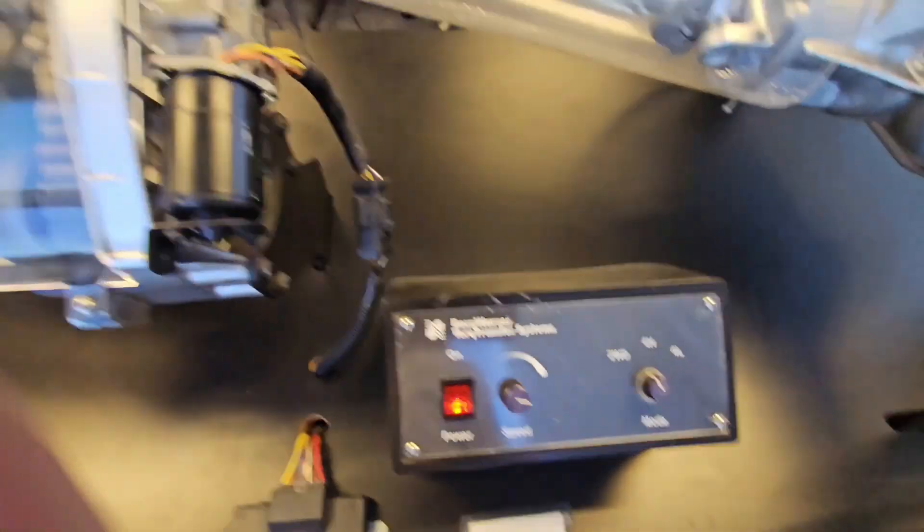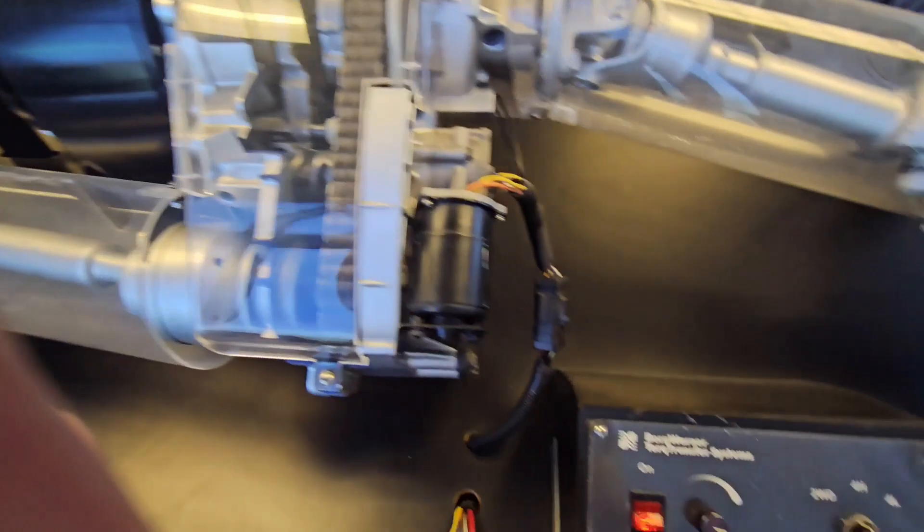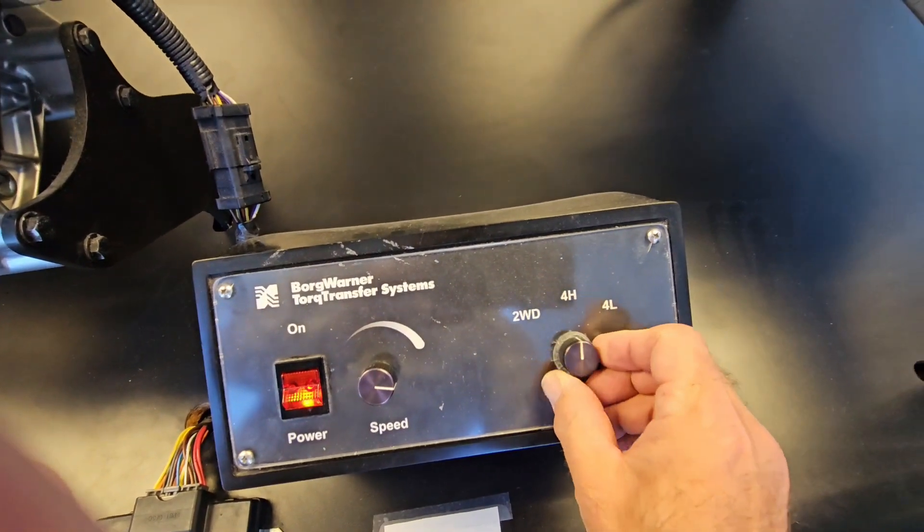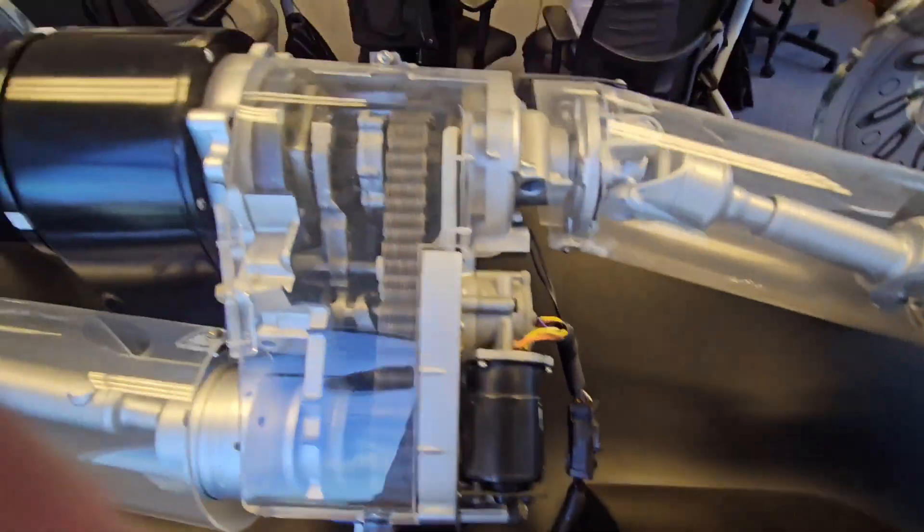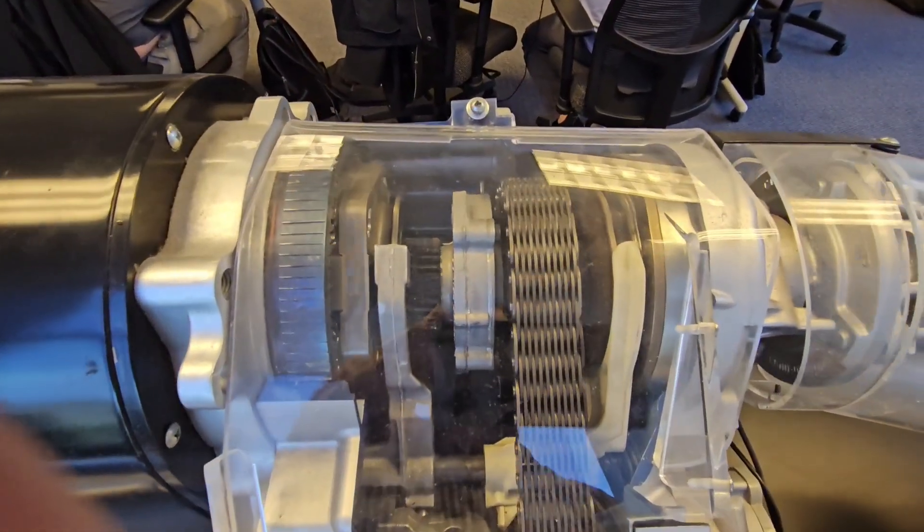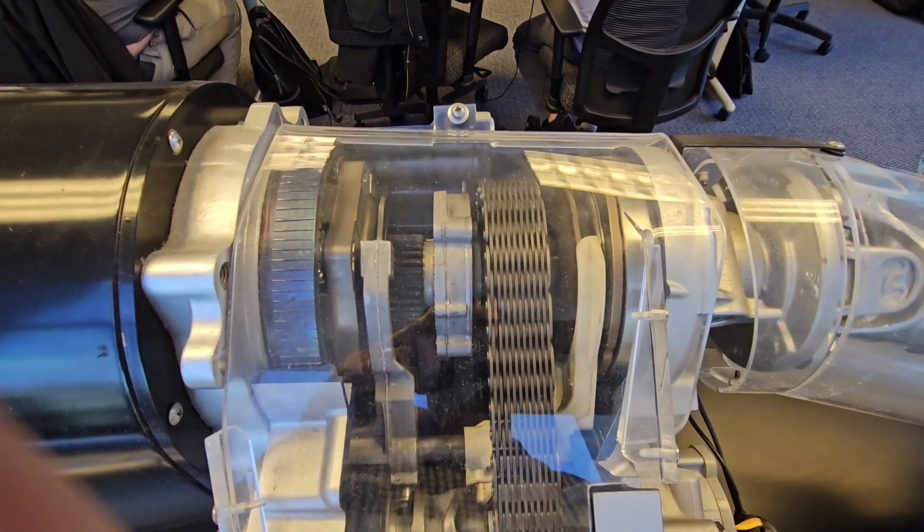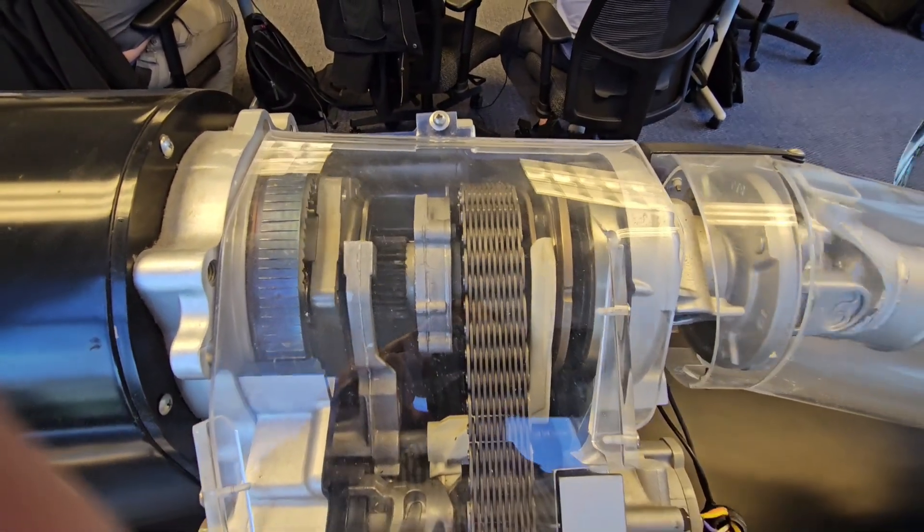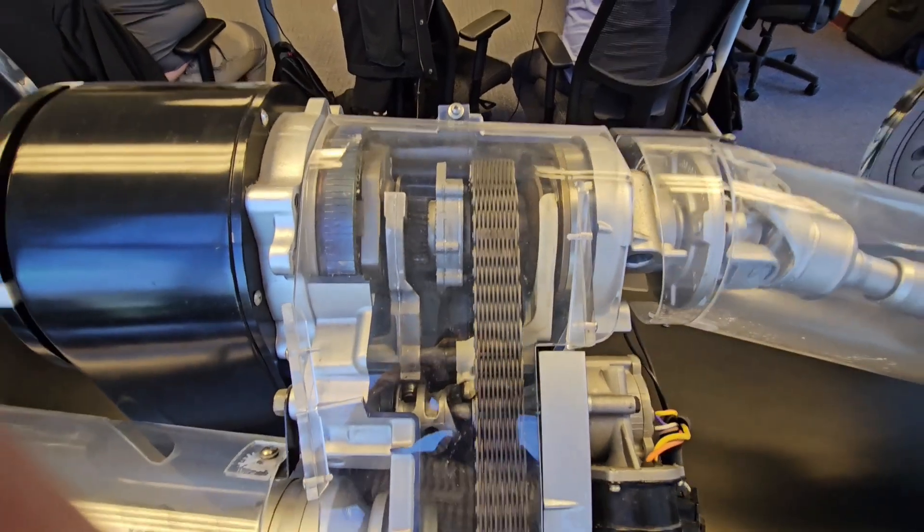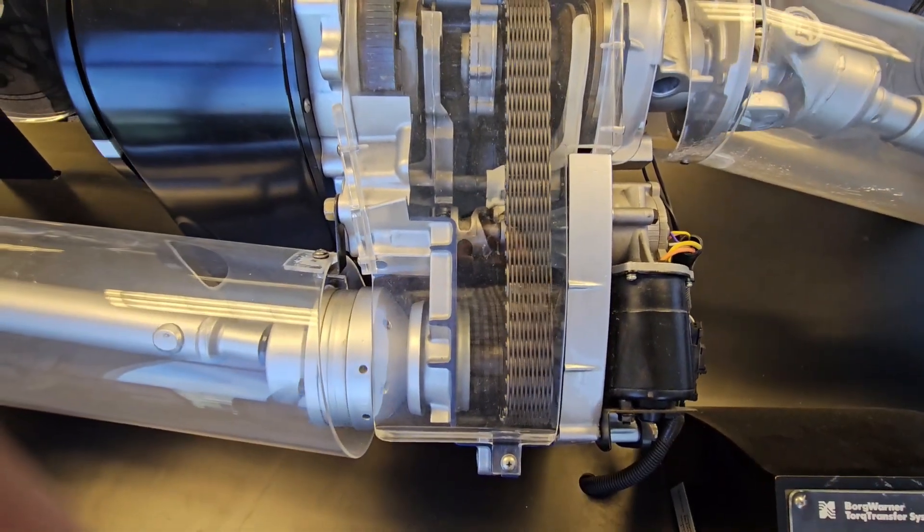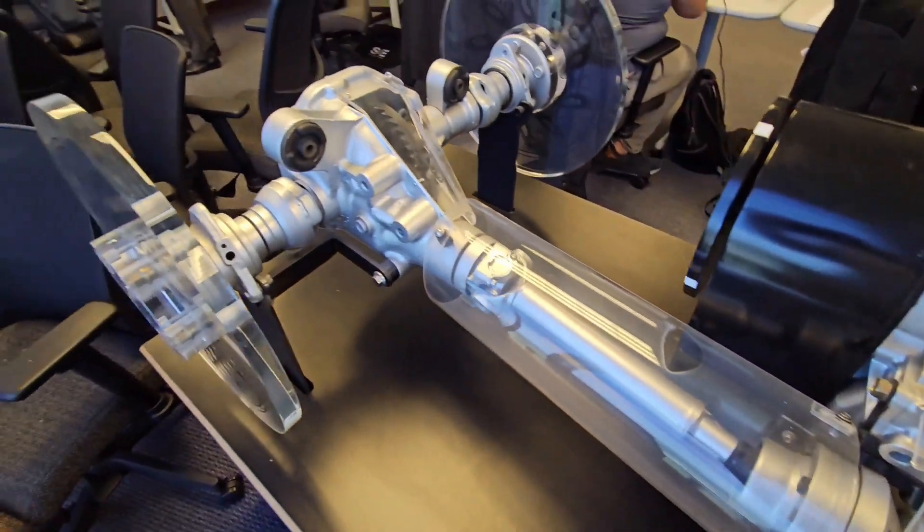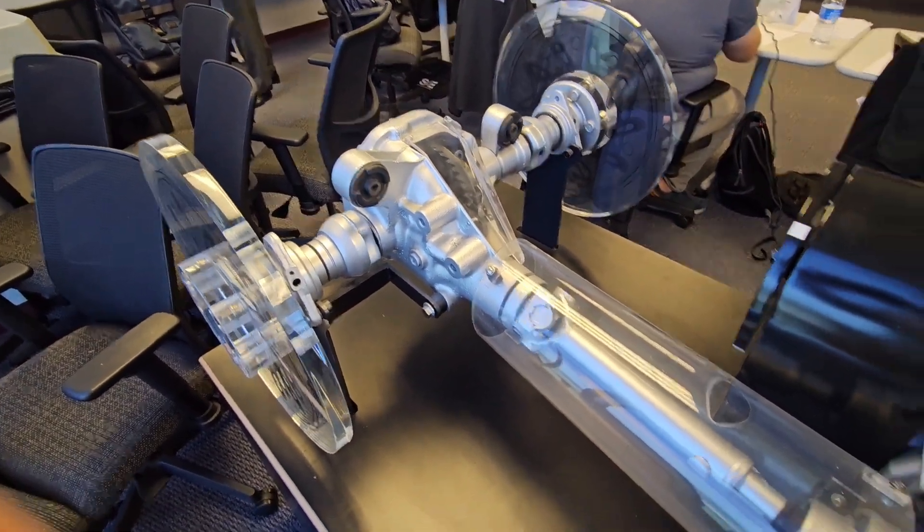And then if you kick it on to four-wheel high, you see the front wheels aren't moving. Let's do that again. So I'm going to click it over to four-wheel high. There you go. So you saw that disc move. This is what that does. It's now applying its power over to the front wheels as well as the rear wheels.